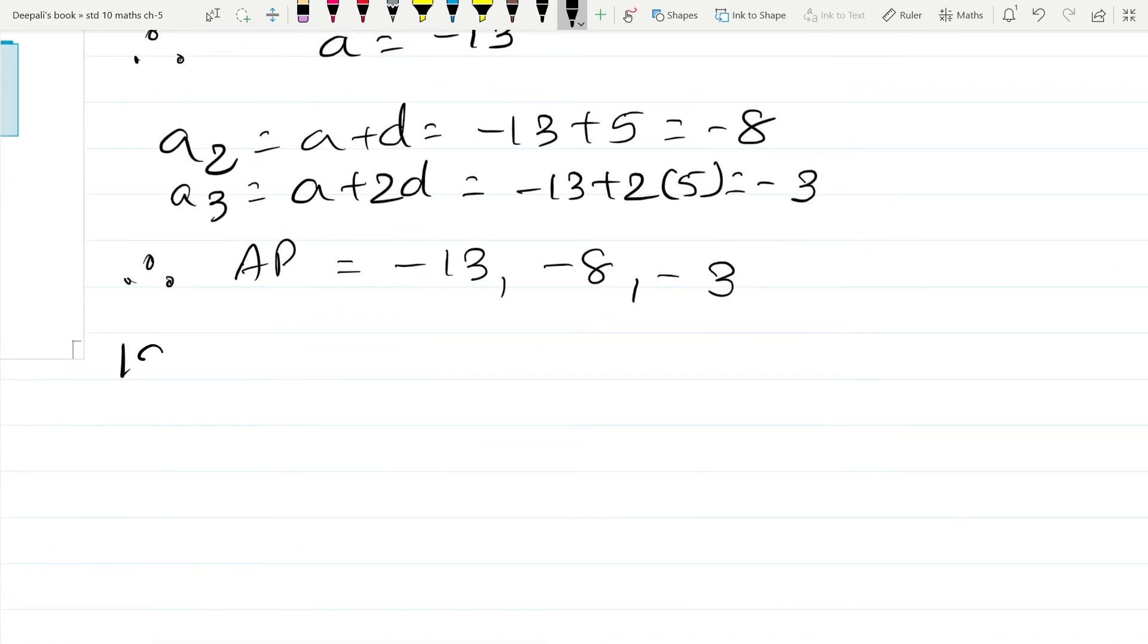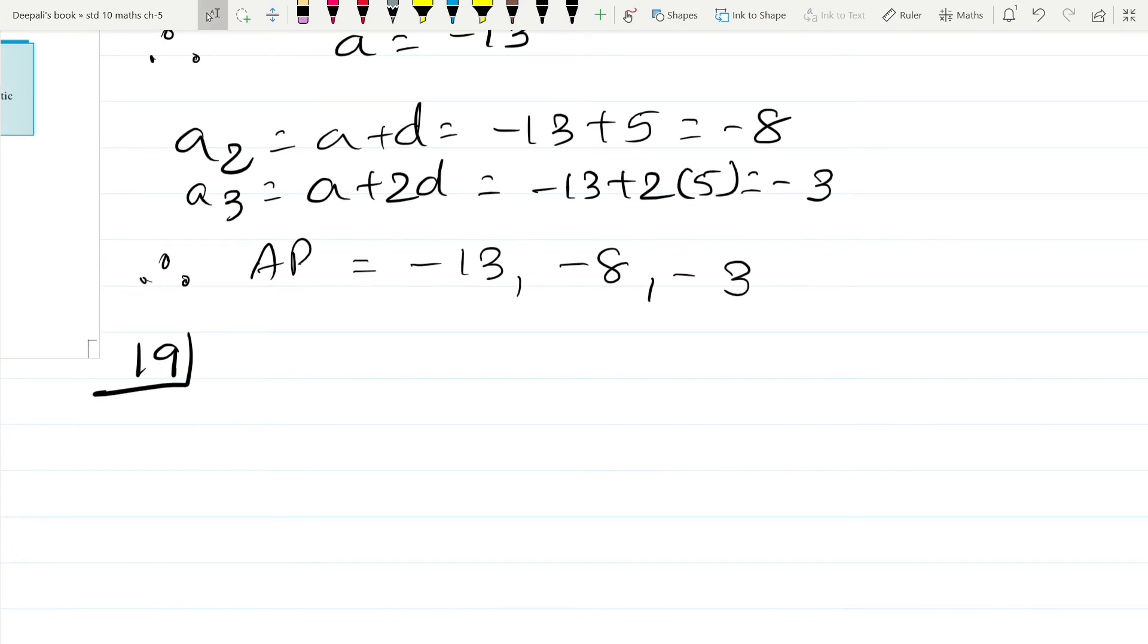Number 19. Shubha Rao started working in 1995 at an annual salary of 5000 and received an increment of 200 each year. Now in which year did his income reach 7000? Now very simple. I won't be completing this sum. I will just give you a hint.